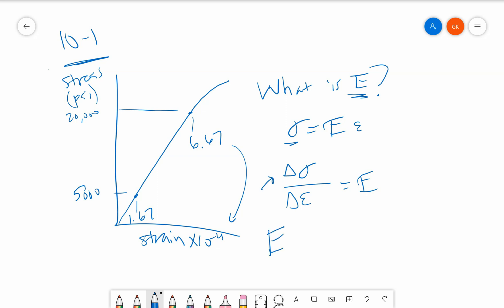So if I plug that in, what I get is that that is equal to 20,000 minus 5,000, all over... I got to include that times 10 to the negative fourth, I'll do that at the end... 6.67 minus 1.67 times 10 to the negative fourth. And that gives me a value of 30 million PSI.